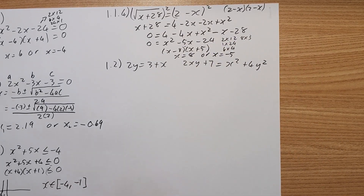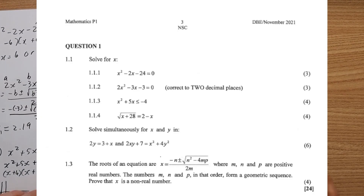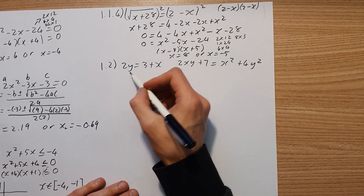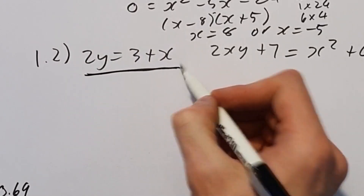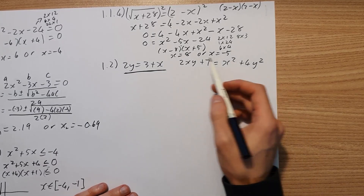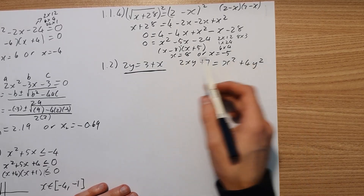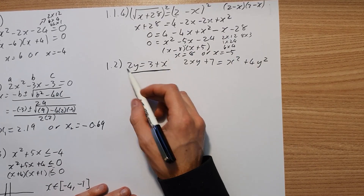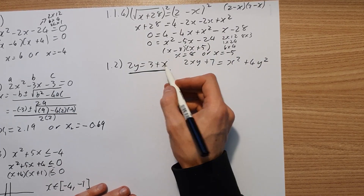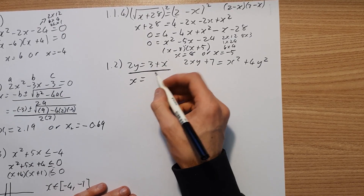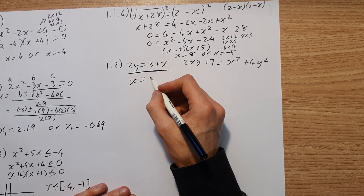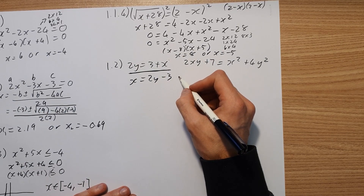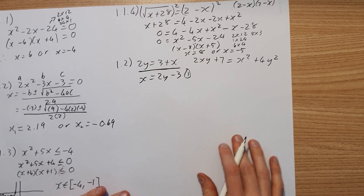That's question 1.1.4. Now question 1.2 looks at simultaneous equations. Please take the simpler one and make it your subject — don't try to make the complicated one your subject. I'm going to make x my subject so I don't have to deal with fractions later on. Therefore x is going to equal 2y minus 3. I'm going to call this equation 1.